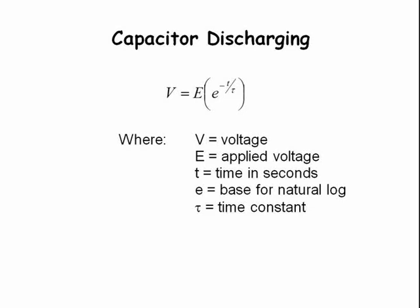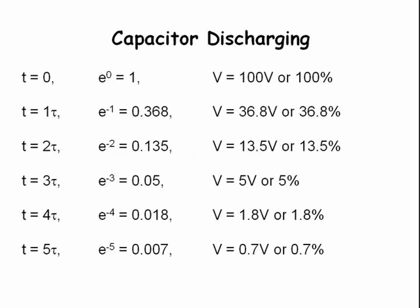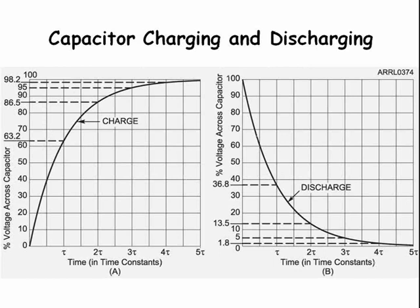Here is the equation for discharging a capacitor: V equals E times the quantity e to the minus T over tau power. If the initial voltage E is 100 volts, then at time T0, the voltage across the capacitor is 100 volts. At one time constant, the voltage across the capacitor is 36.8 volts. At two time constants, the voltage is 13.5 volts, etc. Notice again that this does not plot as a straight line, and also note that mathematically, the voltage across the capacitor never quite reaches 0 volts. Here is the plot of that discharge equation with the 1 tau, 2 tau, 3 and 4 tau points all highlighted for you.